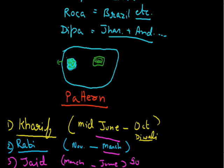Today we covered: what is agriculture, the factors which affect agricultural activities, different types of agriculture, and the patterns of cropping. In the next class we will do different crops, the conditions they need, and agricultural development. That's all for today, thank you.